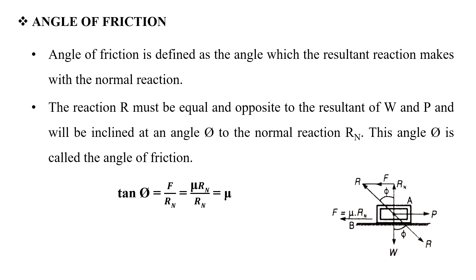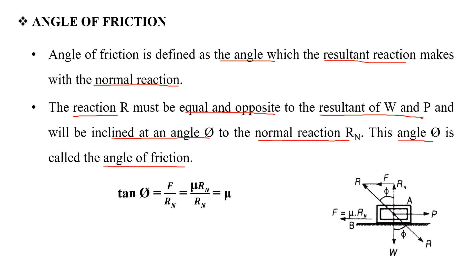Next, the angle of friction. The angle of friction is defined as the angle which the resultant reaction makes with the normal reaction. The resultant reaction is inclined at angle φ, and the angle of friction is equal to tan φ = F / Rn, where F / Rn equals μ.